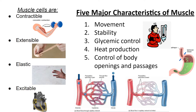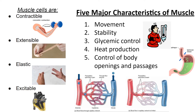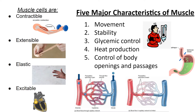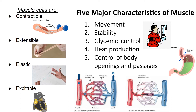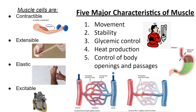First, they are all able to contract, which basically means shorten. In the case of our skeletal muscle, this produces movement. For smooth muscle, that may mean moving food through our digestive system or reducing blood flow to capillaries. And for cardiac muscle, it is what allows it to squeeze to pump blood throughout our body.